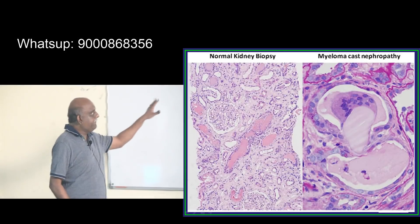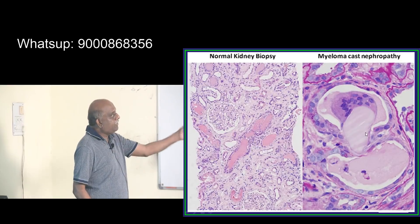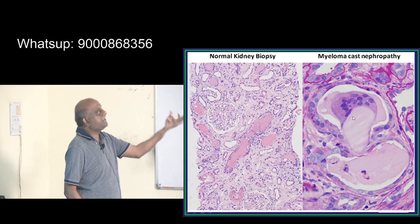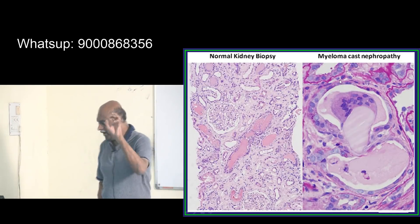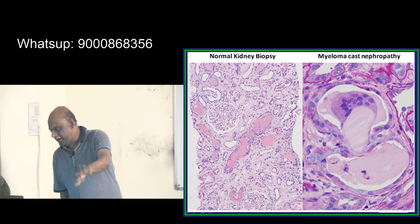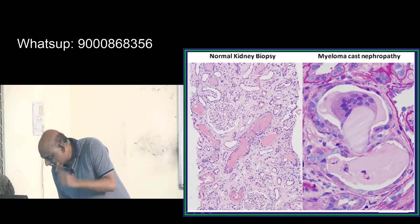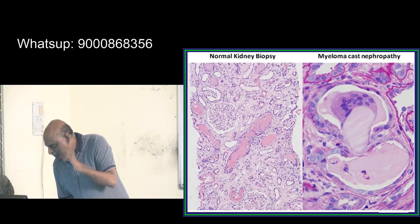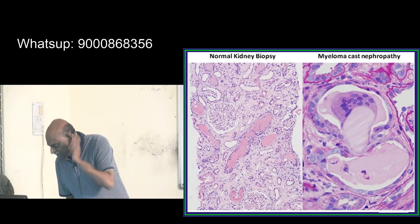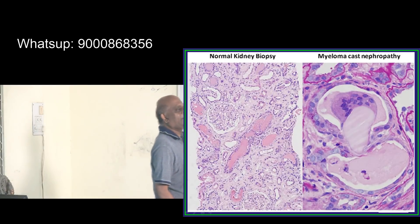A normal kidney biopsy looks like this, and myeloma cast nephropathy classically looks like this. Where the light chains go and deposit is what you need to remember. On bone marrow aspirate: Mott cells, flame cells. On bone marrow biopsy: Russell bodies and Dutcher bodies.